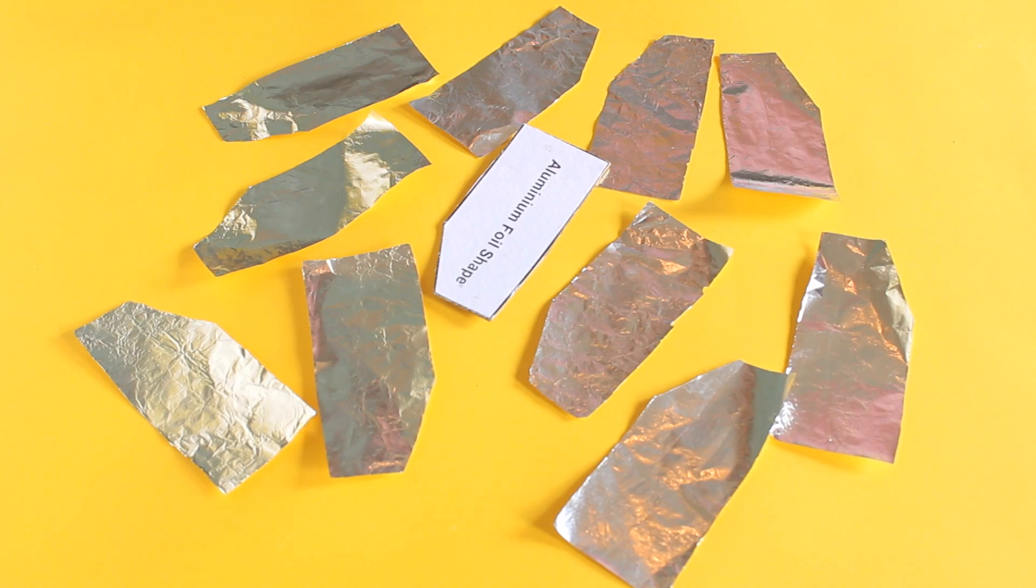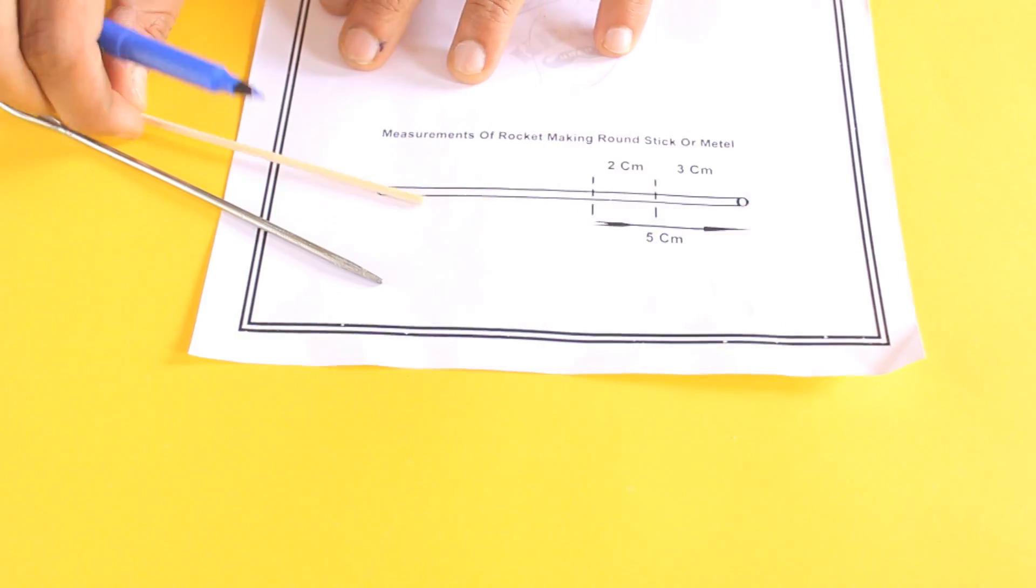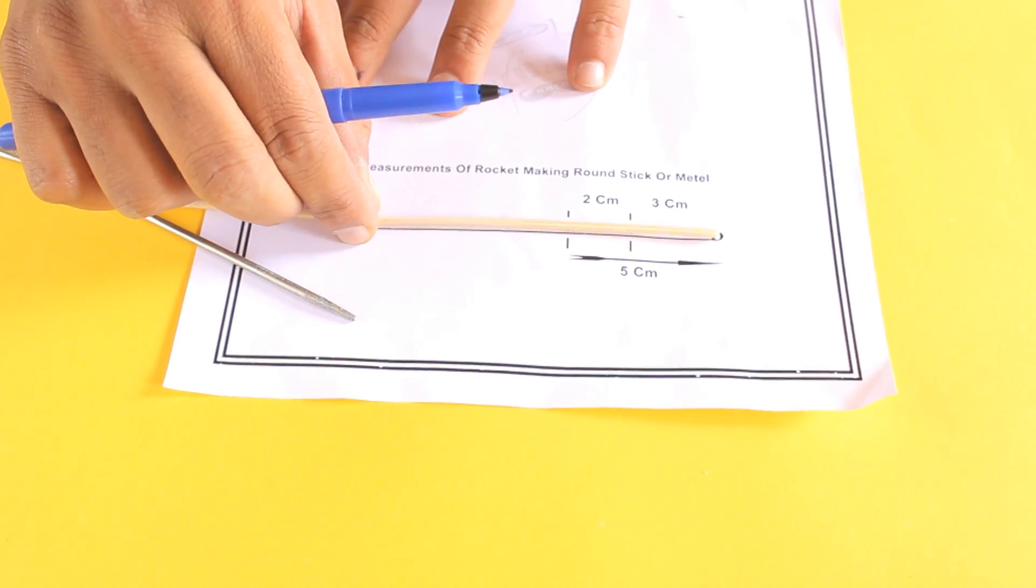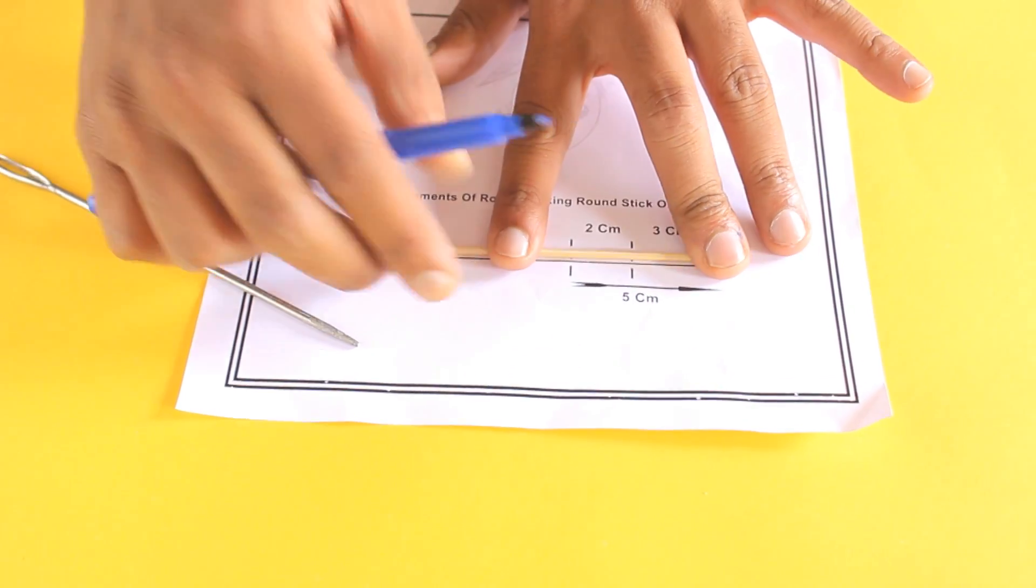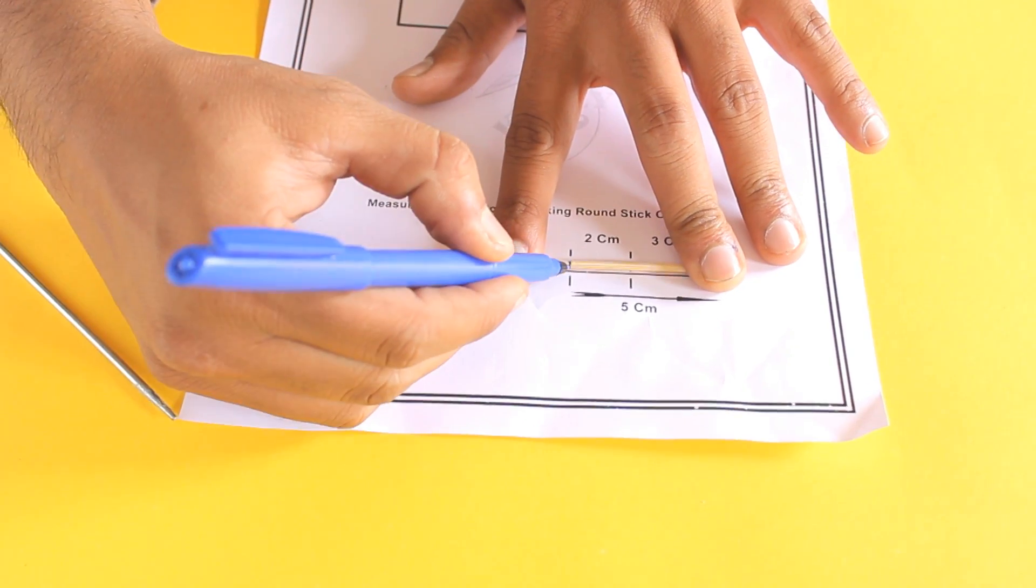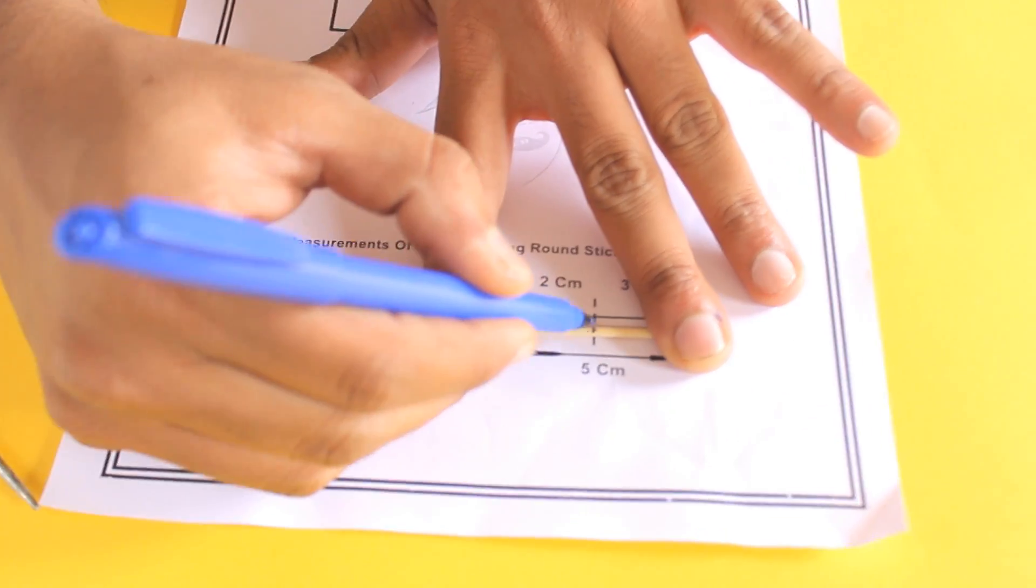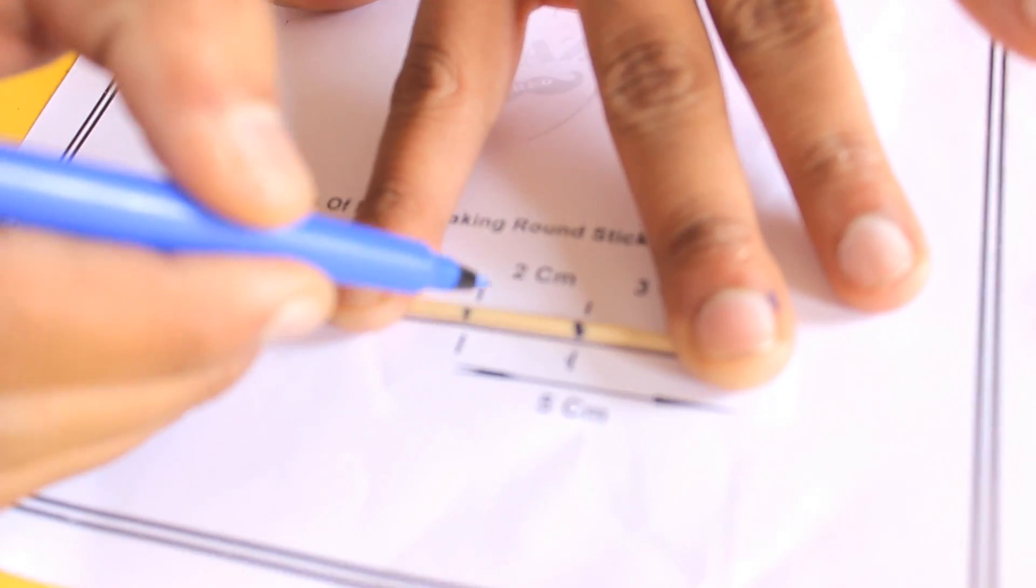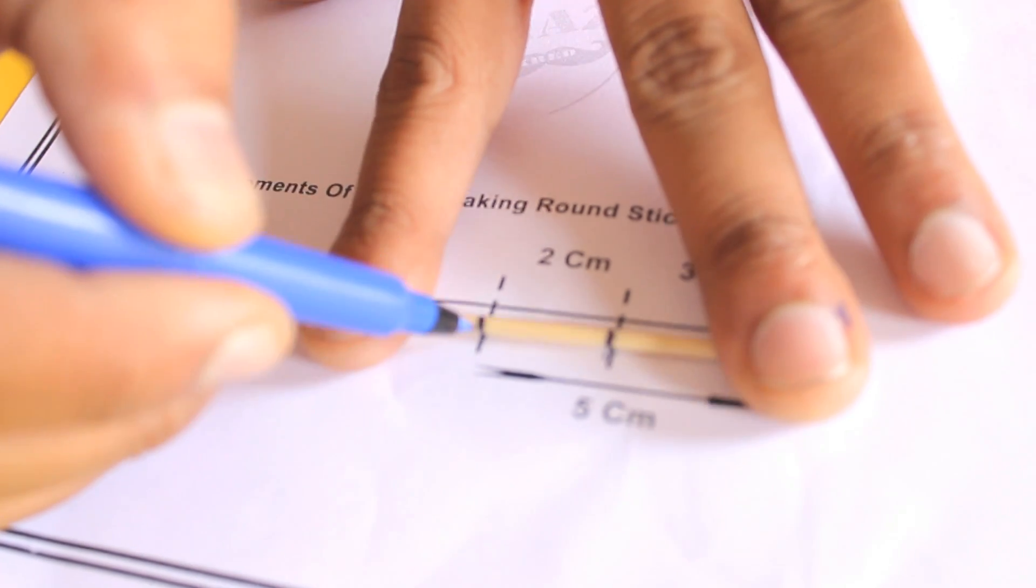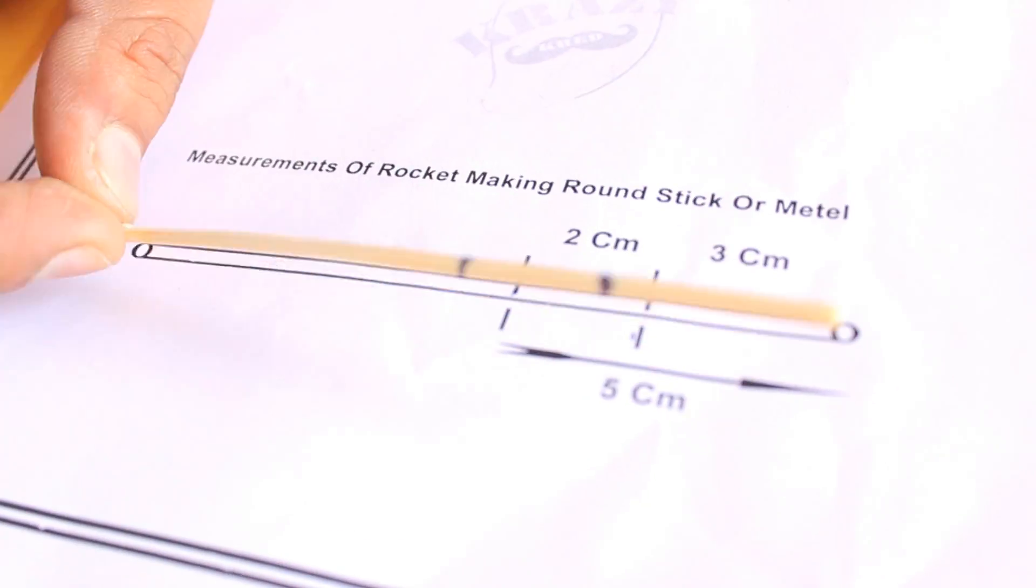So here are our cut portions of aluminum foil. Now take a wooden skewer or a big metallic needle and place it over the template and put marks on them, each at 3 cm and 5 cm as shown on the template.